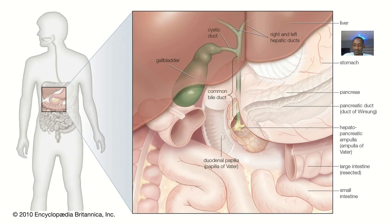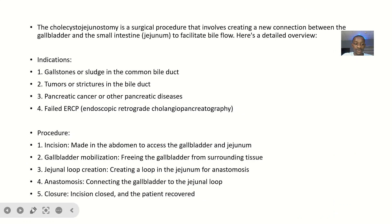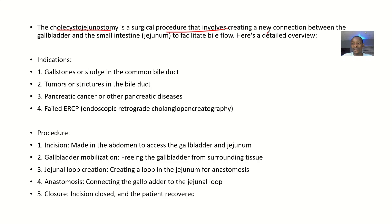For the definition: some people call it choledochojejunal anastomosis, some people call it choledochojejunostomy. The choledochojejunostomy is a surgical procedure that involves creating a new communication between the gallbladder and the small intestine — specifically the jejunum — and you are doing this to facilitate bile flow.